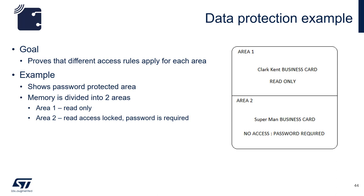While Clark Kent versus Superman is used for illustration, a real-life example can mean secret data of a product covering things like operational history, life cycles, etc. — information that is useful for the manufacturer but not essential for the final user.